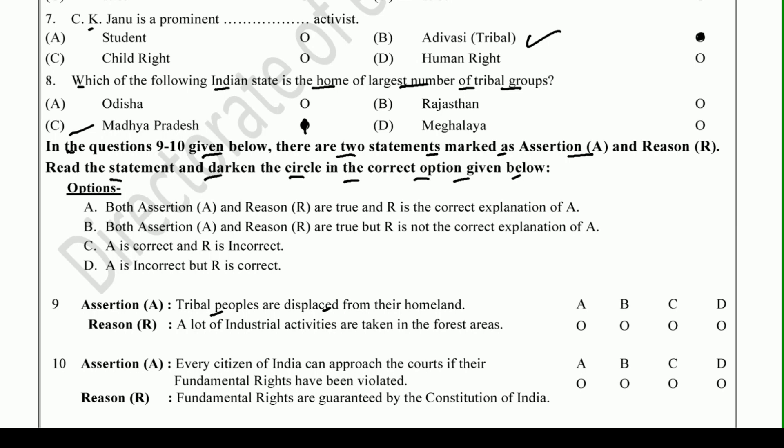Assertion: Tribal groups are displaced from their homeland — tribal people have to leave their homes. Reason: A lot of industrial activities are taking place in forest areas. Since industrial activities have increased in forests, tribal people are displaced. Both the statement and reason are correct, so the option is A.